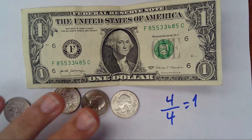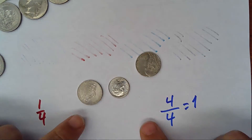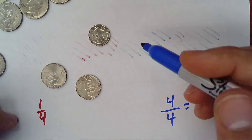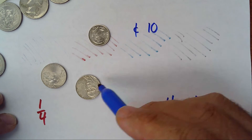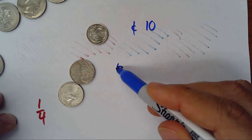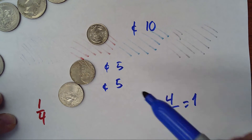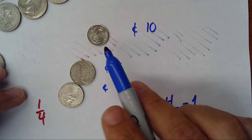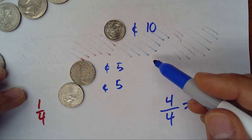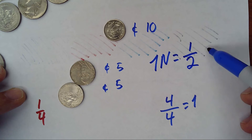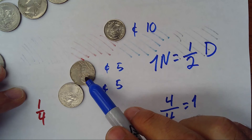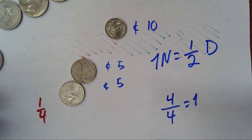Here I have smaller coins. This is a dime — ten cents — and these two are nickels at five cents each. Five and five make ten, so one nickel is one half of one dime because a dime is 10 cents and a nickel is only 5 cents.